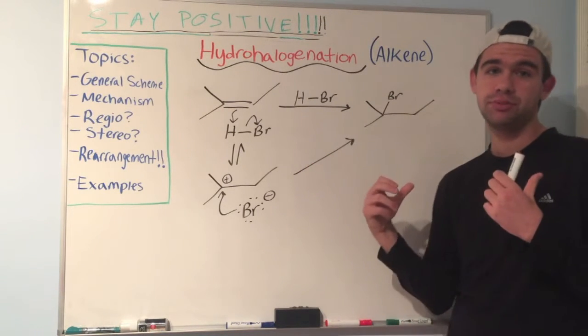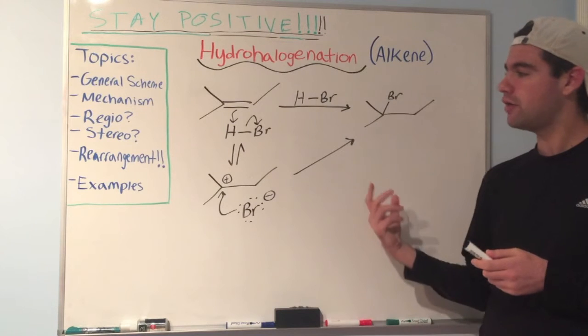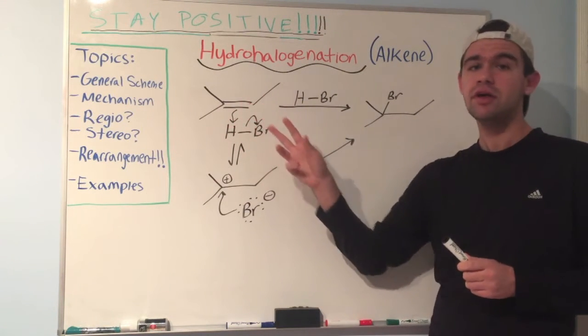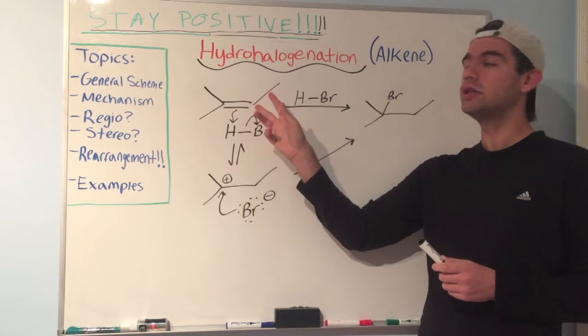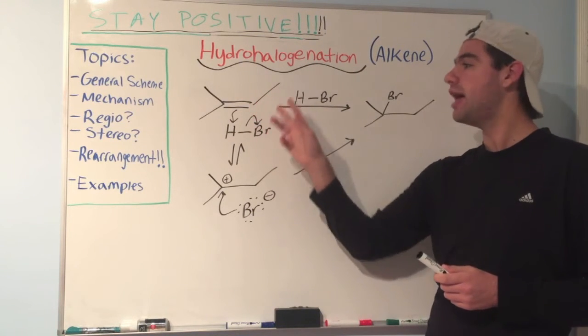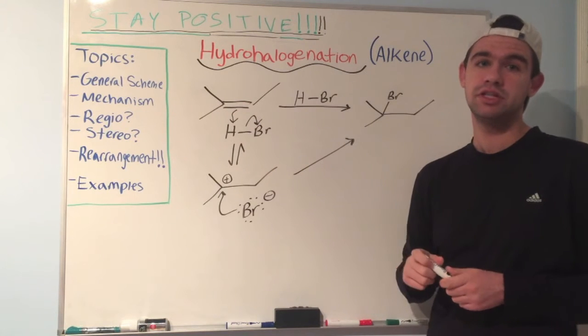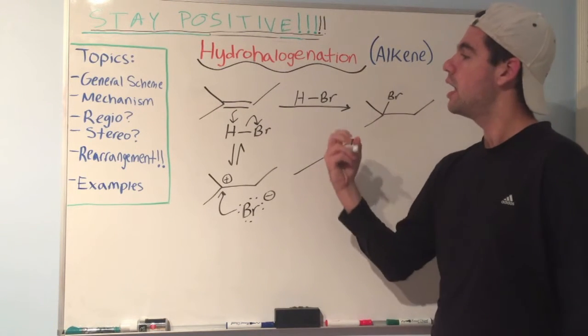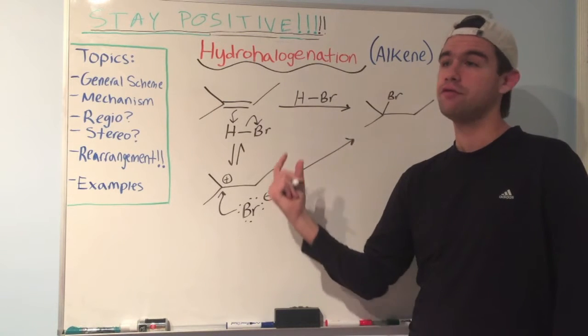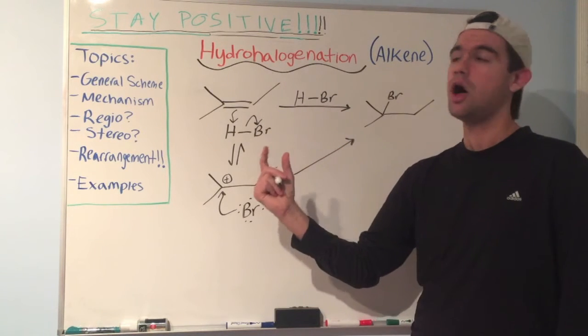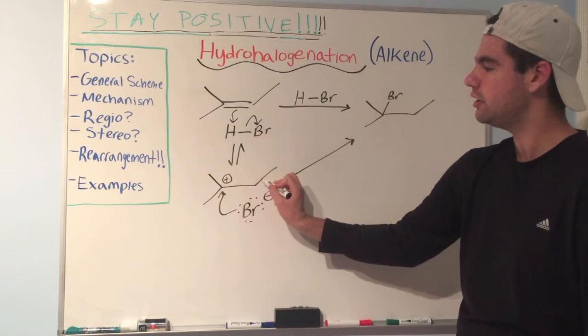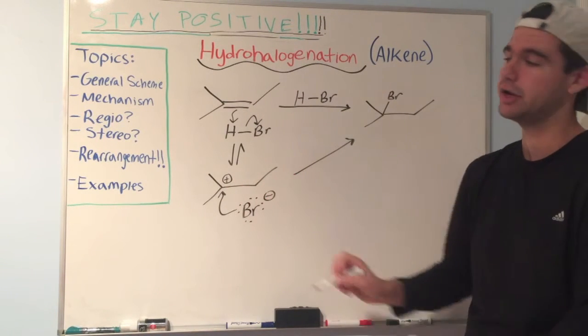And if you watched the previous video, you know that Markovnikov's rule basically says that when it comes to protonating one of these carbons, you want to give the hydrogen to the lowest substituted carbon, so that the carbocation is most stable. In other words, you want to generate the most stable carbocation, which means you want the carbocation to be on the highest substituted carbon. That's why we prefer the carbocation here, where it's tertiary, versus here, where it would be secondary.